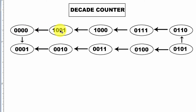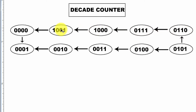First, 0 is the start, then 1, 2, 3, 4, 5, 6, 7, 8, 9 — that is the number of clocks. Decade counter is also known as a mod 10 counter.